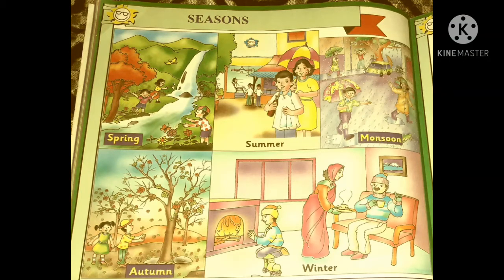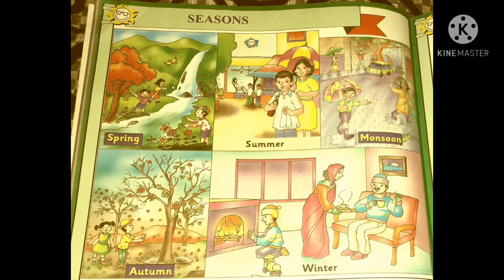We can see the picture of Winter season. In this picture, there is a woman, a man, and a boy. You can see the woman giving hot coffee and tea. In Winter season, we drink tea and coffee, we eat noodles and pasta, and we wear sweater, muffler, and monkey cap.